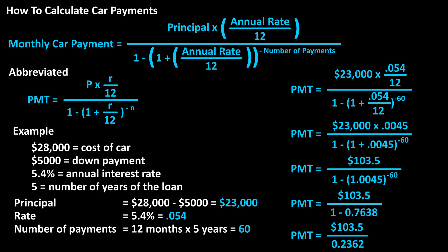Doing the calculations, we get $103.50 in the numerator and .236158 rounded off in the denominator. And this calculates to a monthly car payment of $438.27 rounded off.